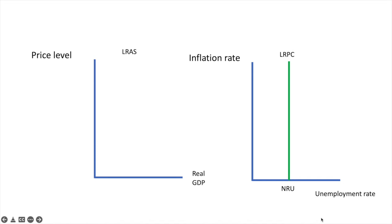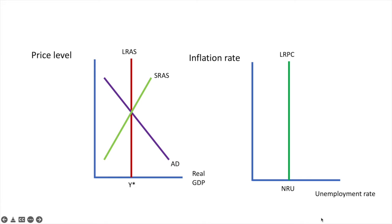You'll recall that in the classical view of economics, the long-run aggregate supply curve is vertical at the natural rate of unemployment, which we will call Y-star in the graph on the left. Now let's bring in our aggregate demand and short-run aggregate supply curves. As you can see, our economy is currently in short-run and long-run equilibrium at PL-star.